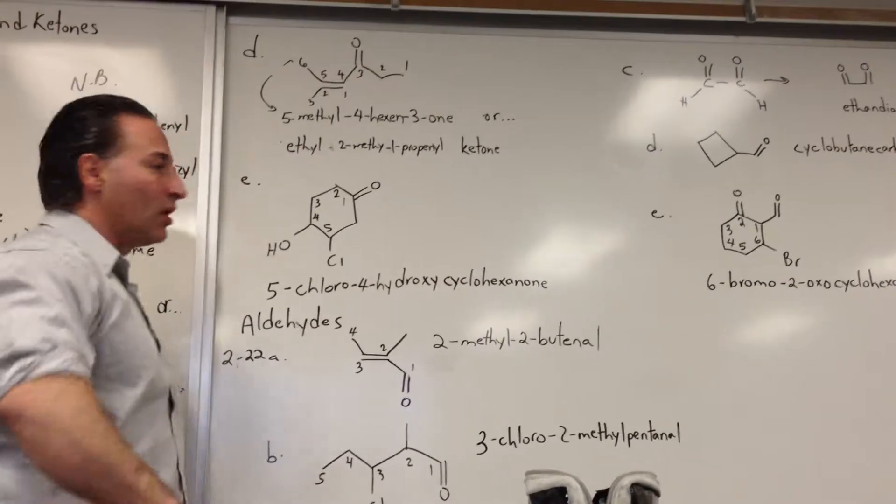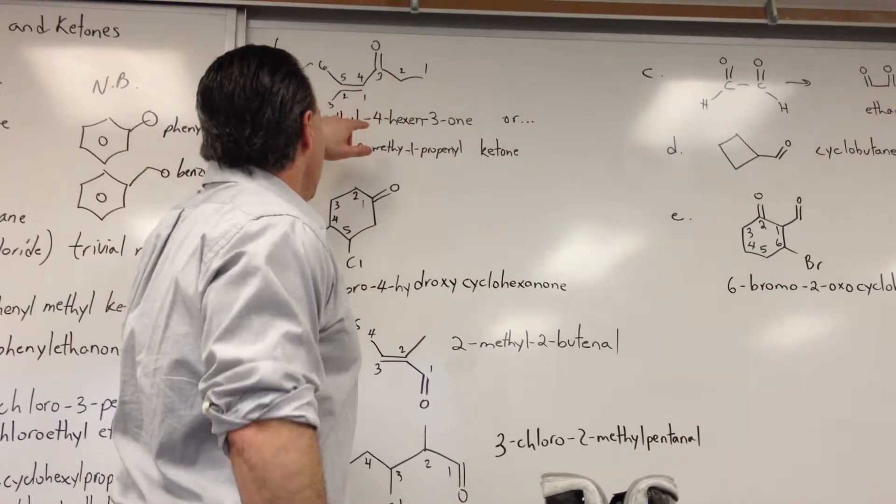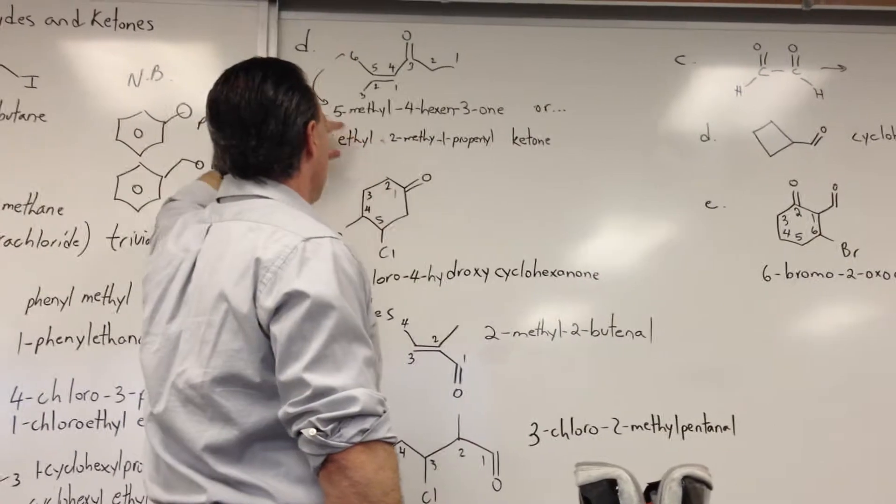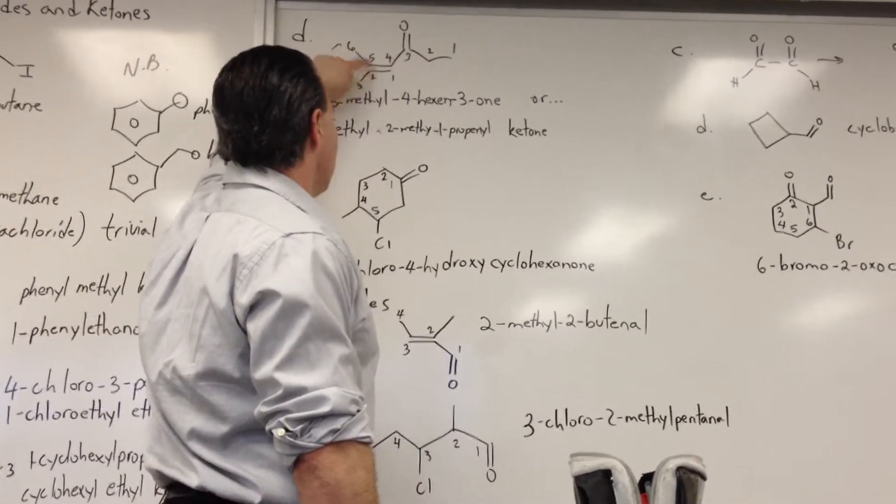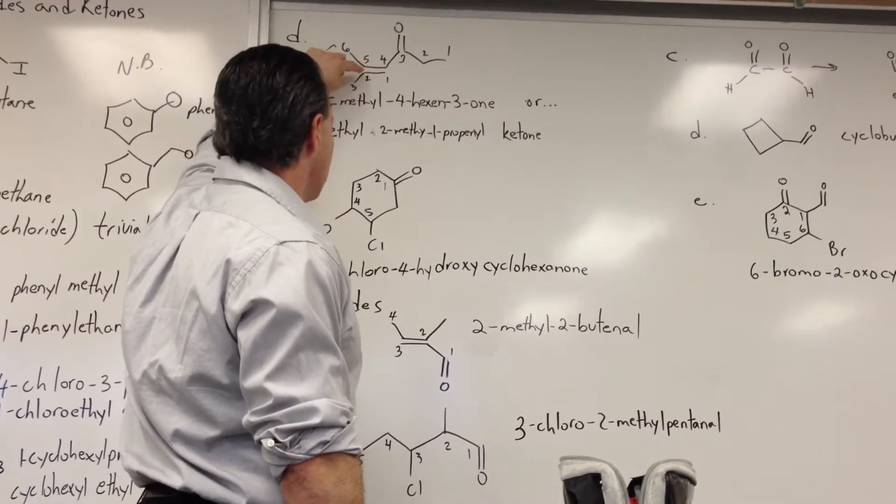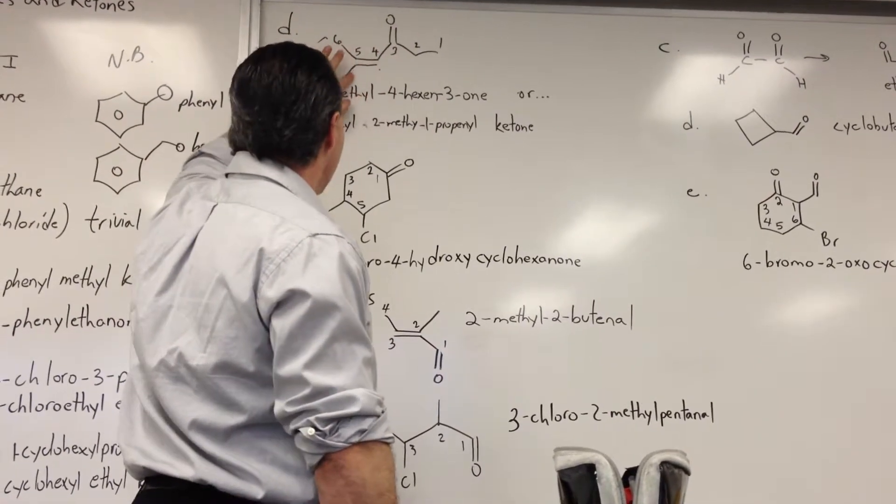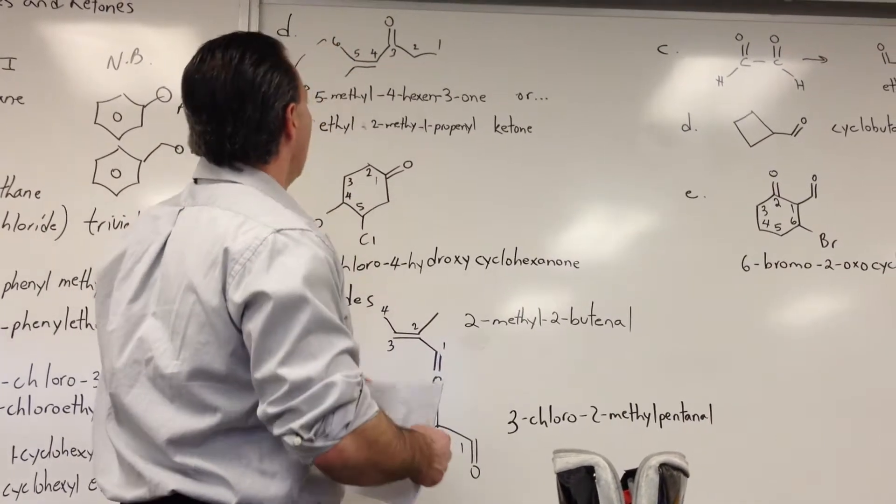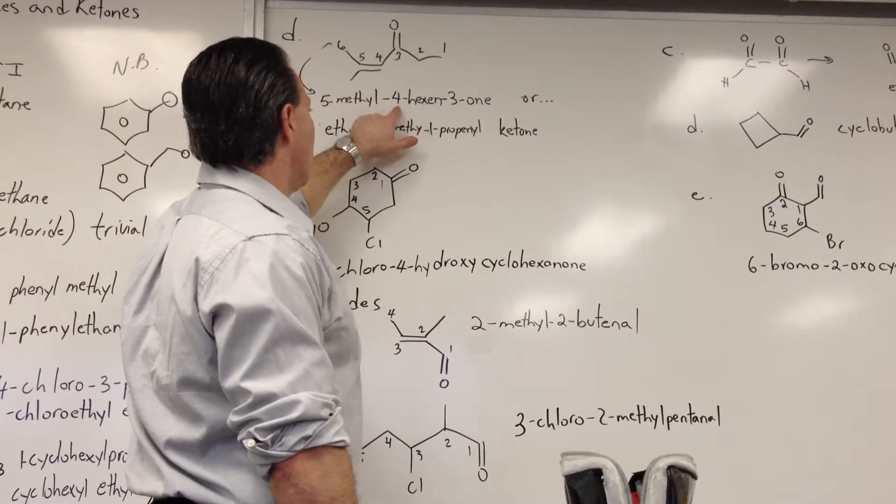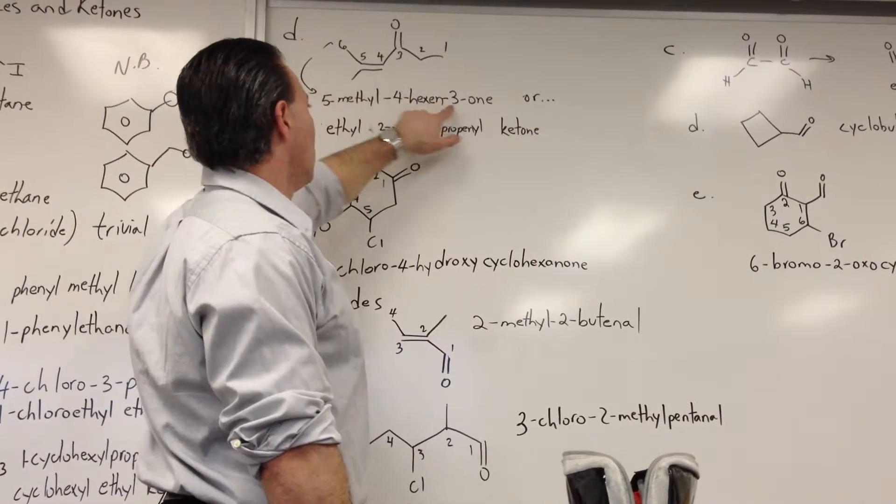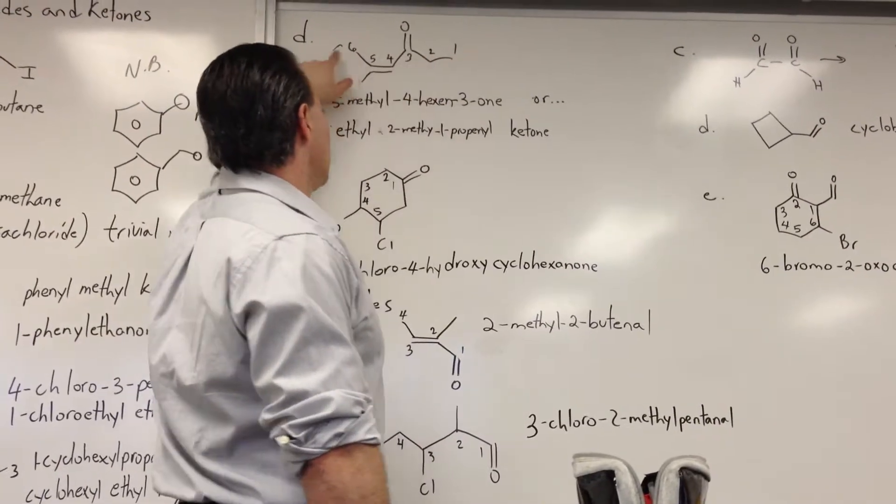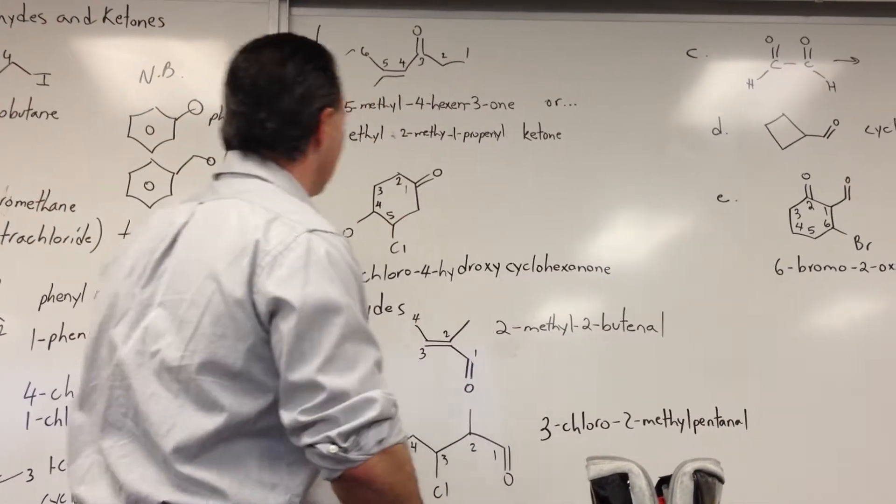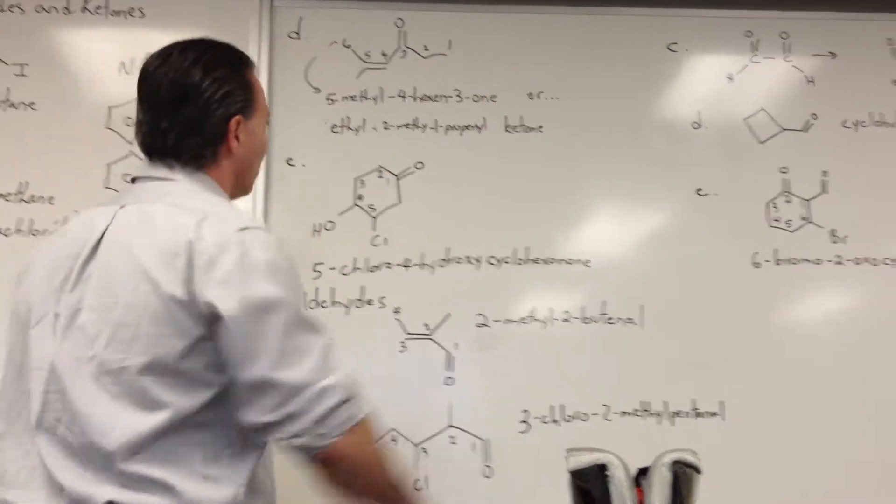D, we have a ketone with a six-carbon chain, double bond at the fourth position, the ketone at the third position, so we would call that 5-methyl. Here's the methyl at the fifth, sorry, here's the methyl at the fifth position. I should erase these numbers for clarity. There's a methyl group at the fifth position. The double bond occurs at the fourth position, so you say 3-one for the ketone, and it's a hexene to indicate the fact that it's an alkene.